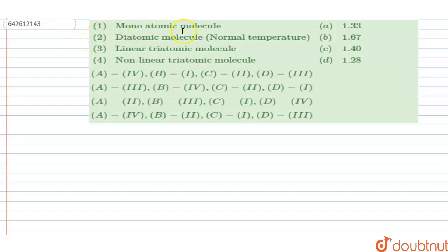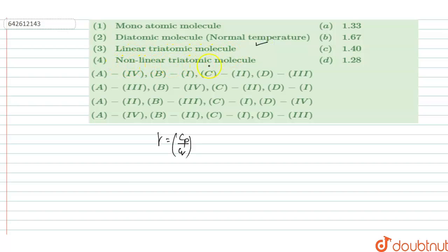In this question, we are given four types of molecules and the value of gamma. Gamma is equal to Cp by Cv. The first is the monoatomic molecule, second is the diatomic molecule at normal temperature, third is the linear triatomic molecule, and fourth is the non-linear triatomic molecule.